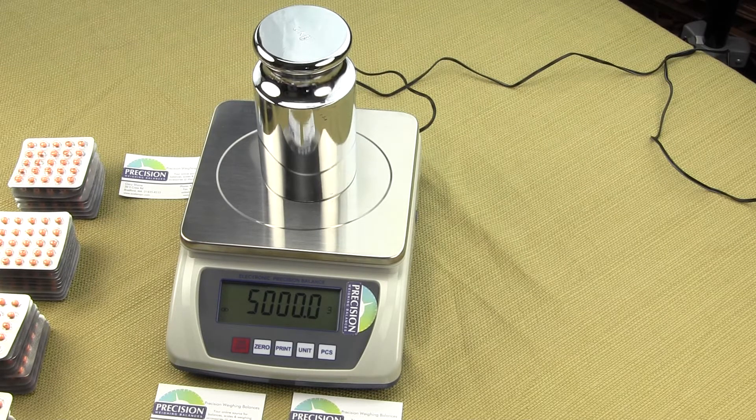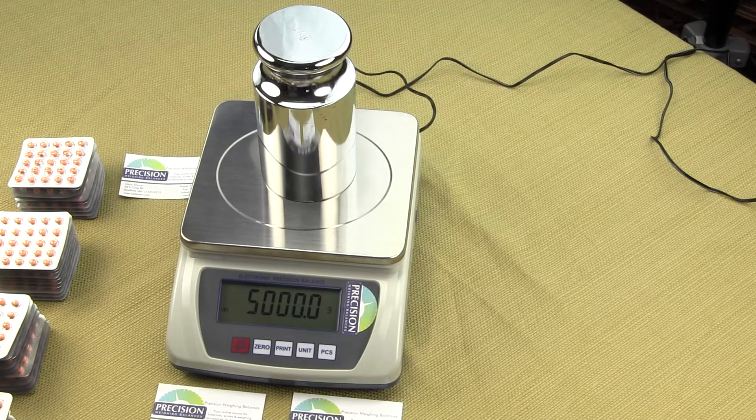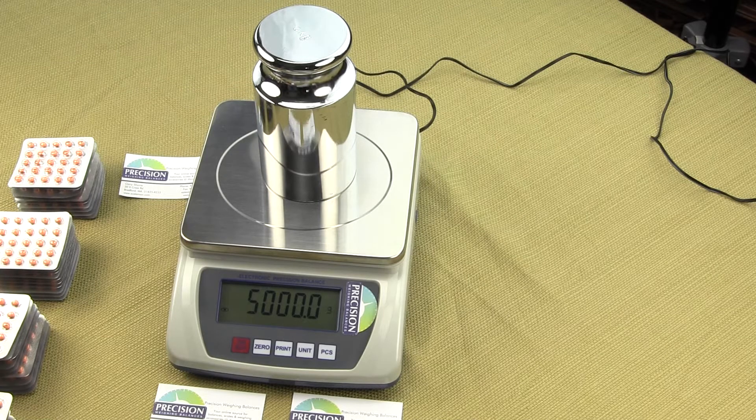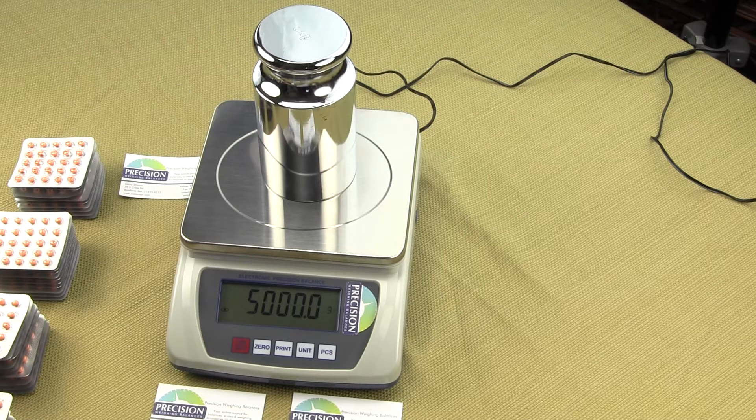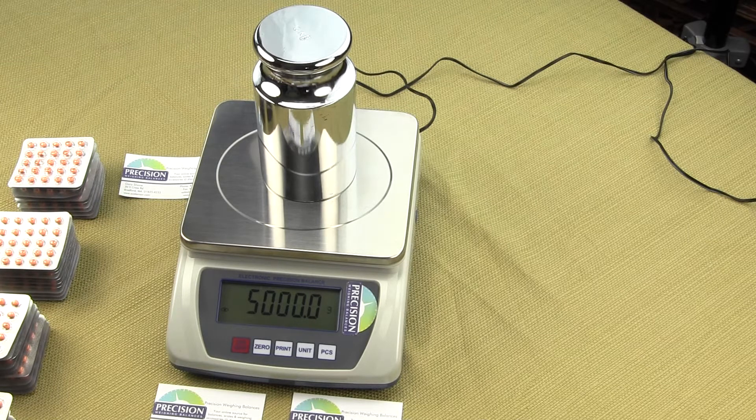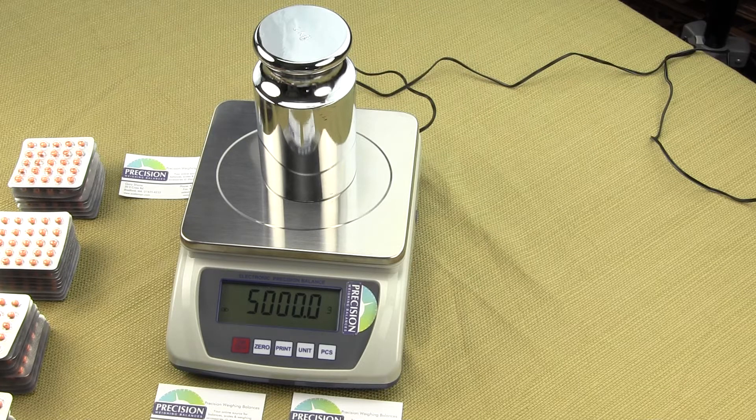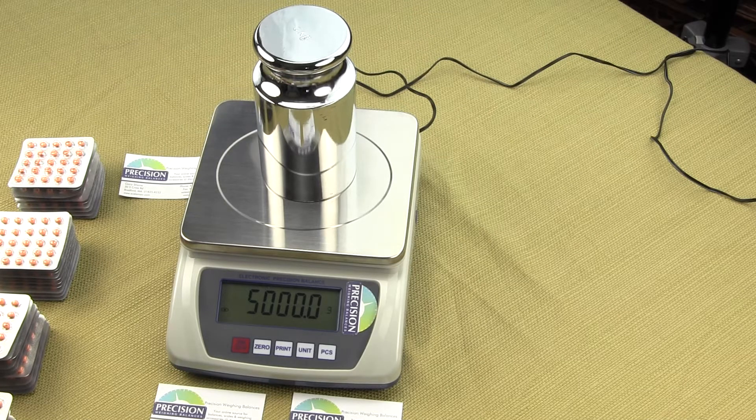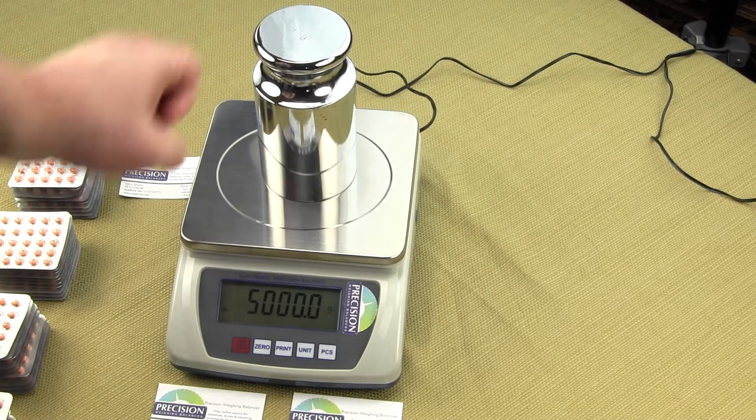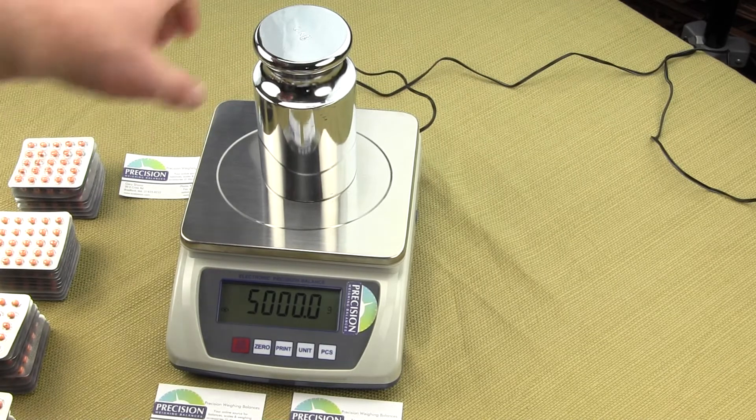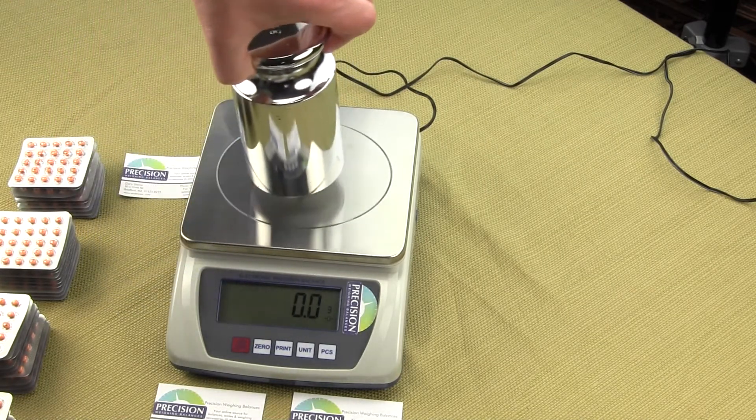You can order the EPB10K from our website www.balances.com or scaleman.com. The EPB10K is an affordable compact digital scale offering a huge weighing capacity of 10,000 grams by a tenth of a gram readability.